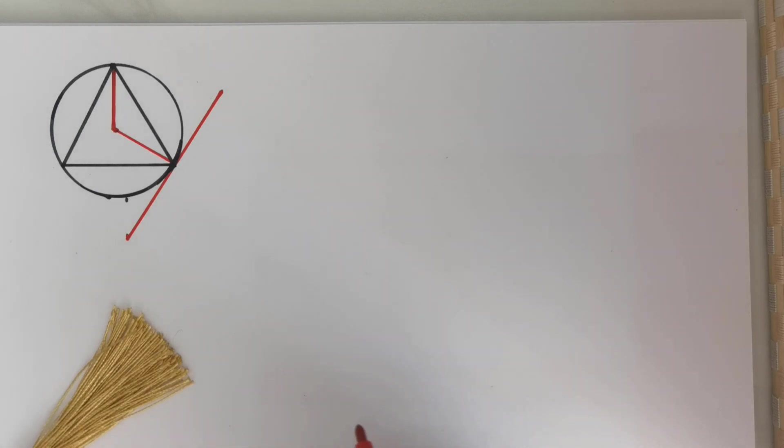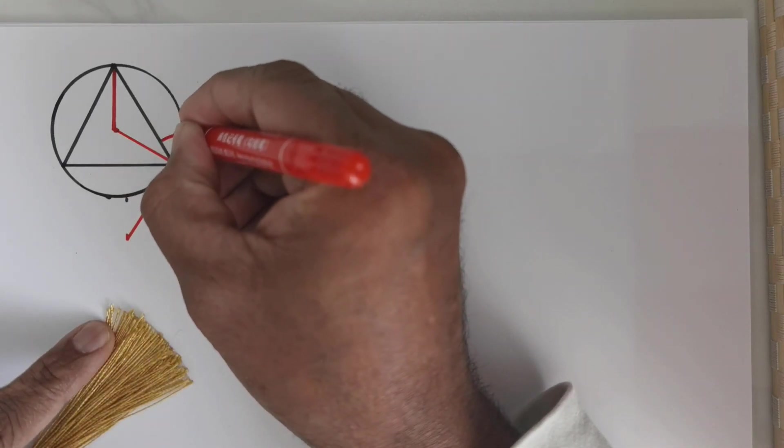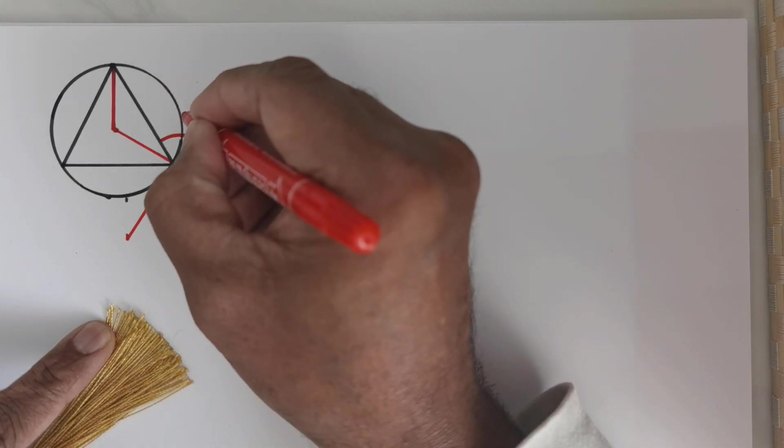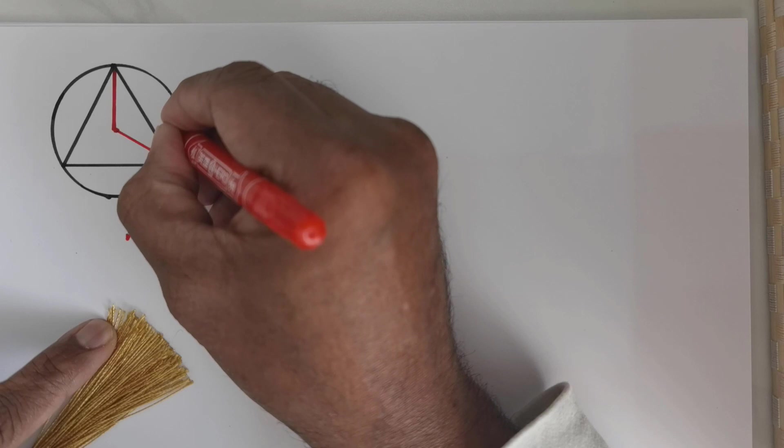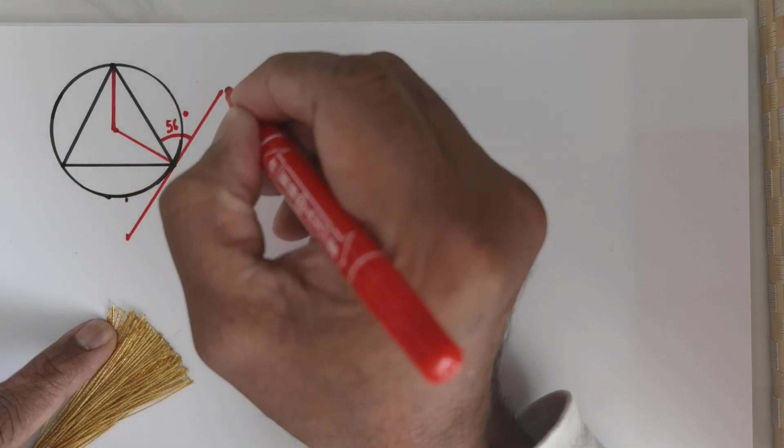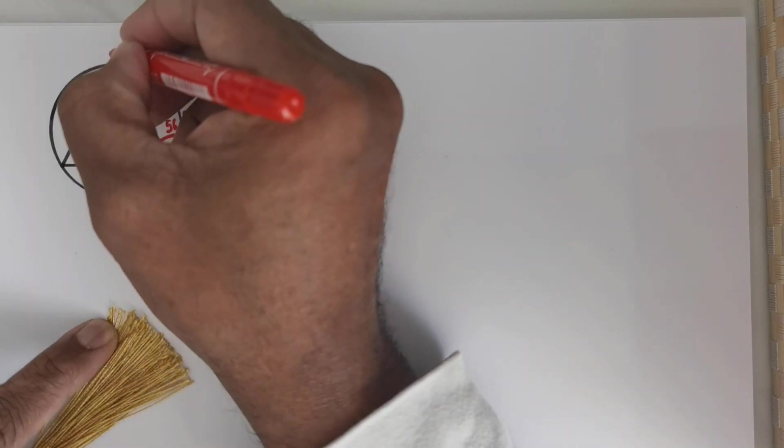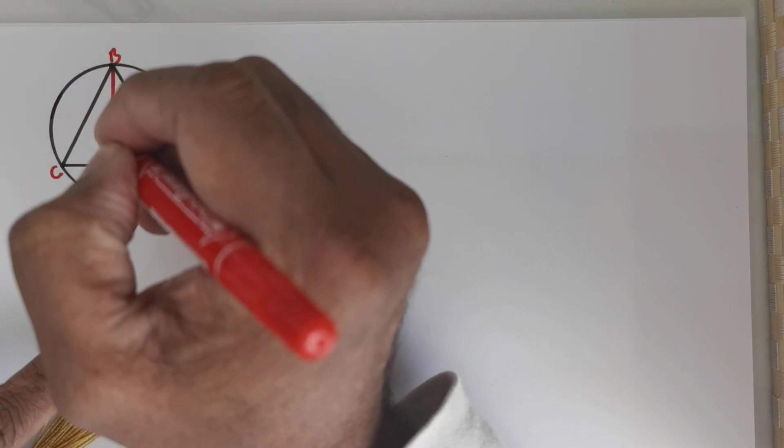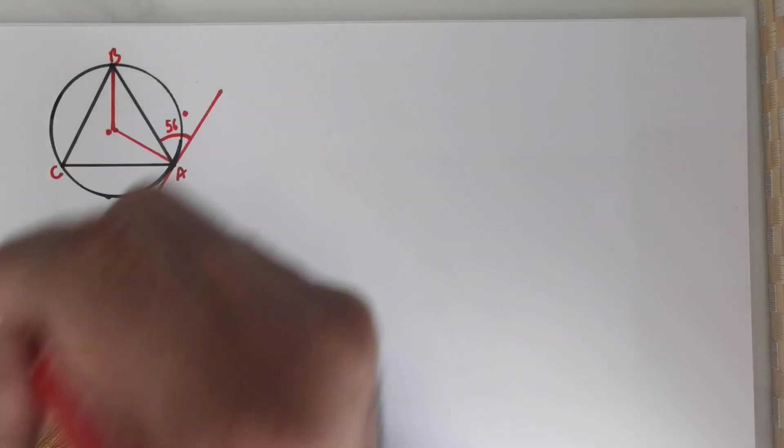We have the following information that I would have to write now. So this is an angle that's given. This angle is given to be 56 degrees. Let me write the vertices A, B, C, and this is O.